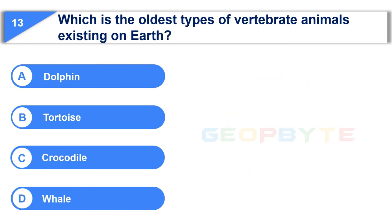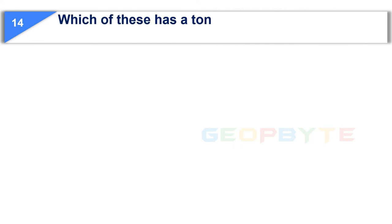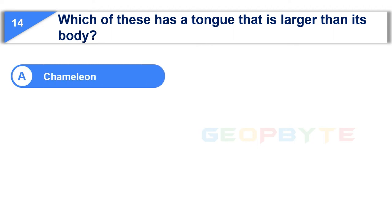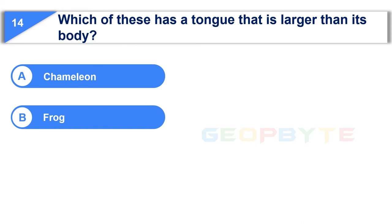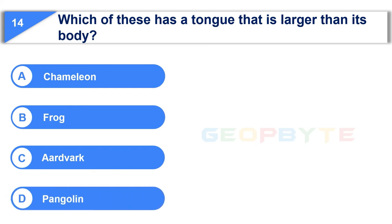Your time is up and the correct answer is Option B: Tortoise. Moving to the 14th question: which of these has a tongue that is larger than its body? Option A: Chameleon. Option B: Frog. Option C: Aardvark. Option D: Pangolin. Your time starts now.